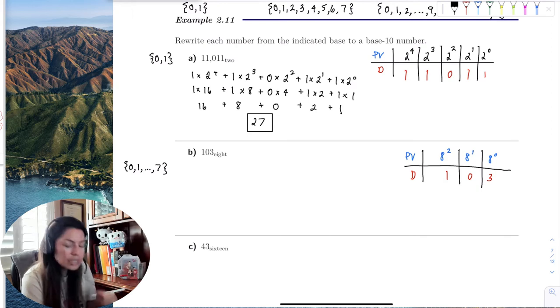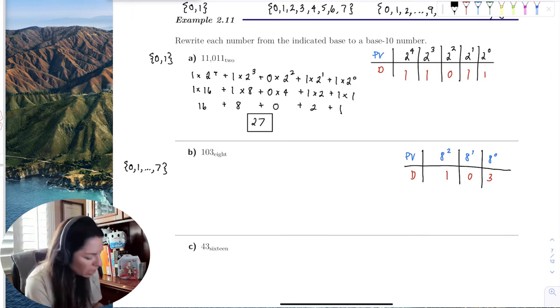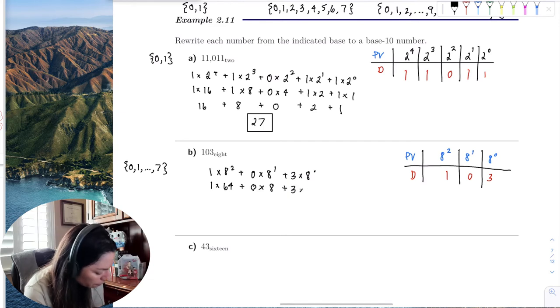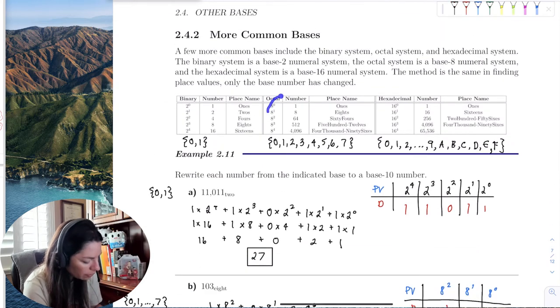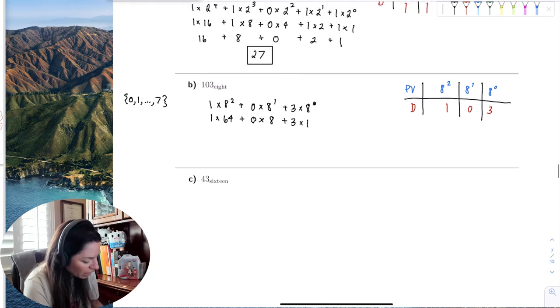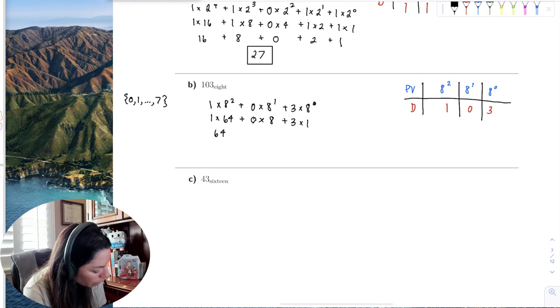Using the same method, it'll be 1 times 8 squared, plus 0 times 8 to the first, plus 3 times 8 to the 0. So 1 times 64, plus 0 times 8, plus 3 times 1. I have a little cheat sheet here. Simplifying, I get 64 plus 0 plus 3, which is 67.